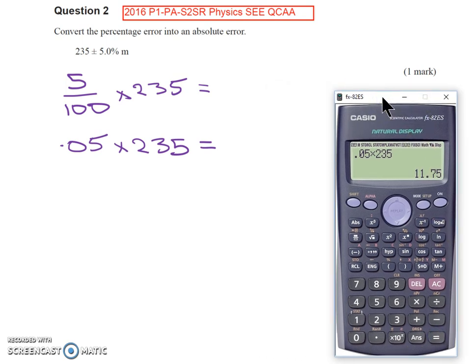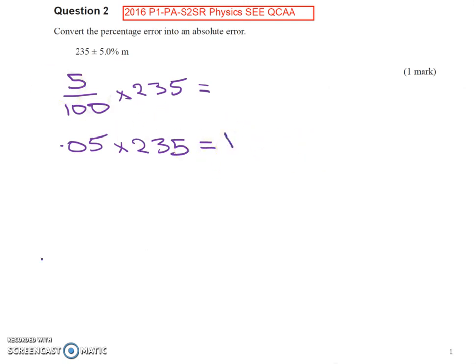Okay, 11.75. Now let's have a look at our answer. Our answer is three significant figures with no decimal places. So 235 plus or minus.